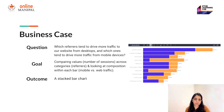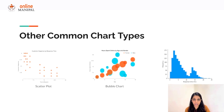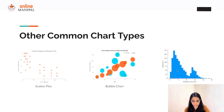That gives you a good idea of how we use the Question, Goal, and Outcome framework. We can similarly apply this to other chart types. To refresh our memories: a scatter plot is used to establish the relationship between two variables, particularly to establish a correlation. A bubble chart is used when you want to represent nominal data and compare using values. A histogram is used to show the distribution of continuous or discrete data by condensing information into intervals.